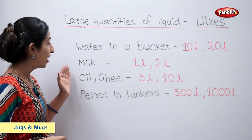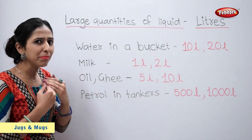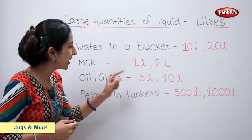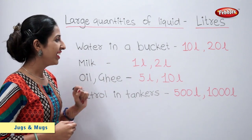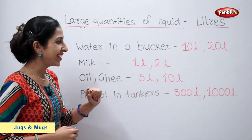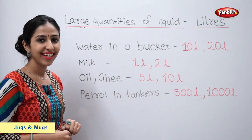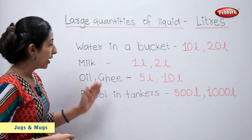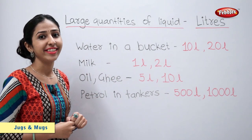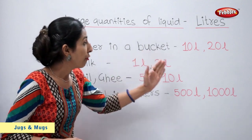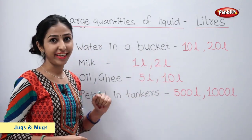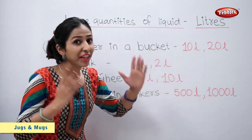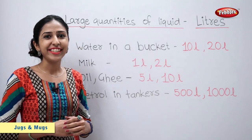Oil and ghee that we buy come in 5 litres or 10 litres. Petrol in petrol tankers holds 500 litres or 1000 litres.